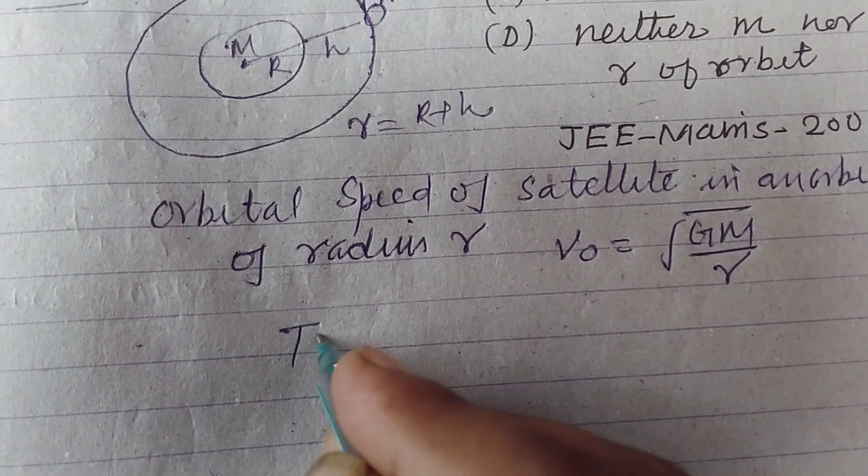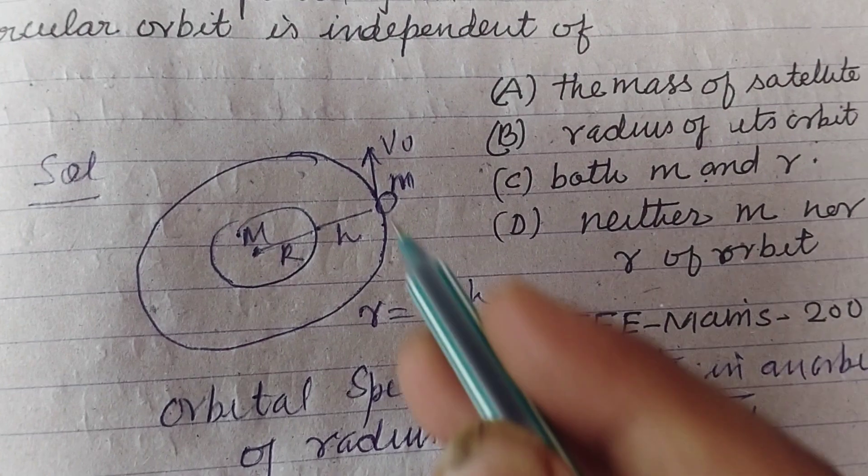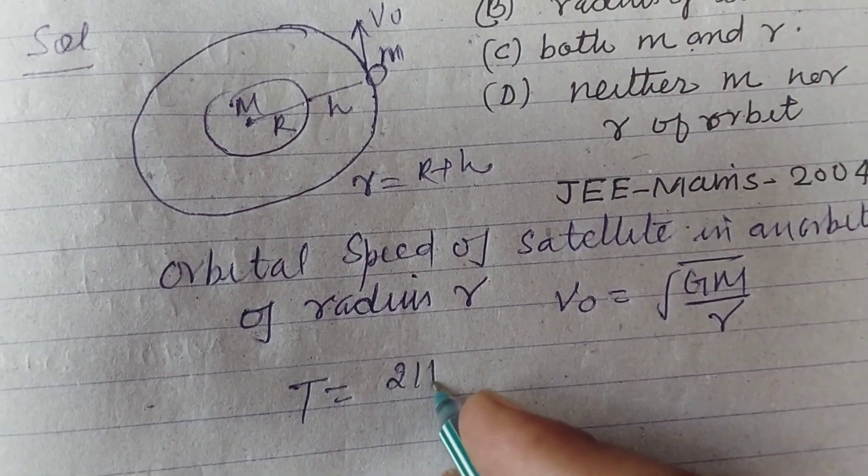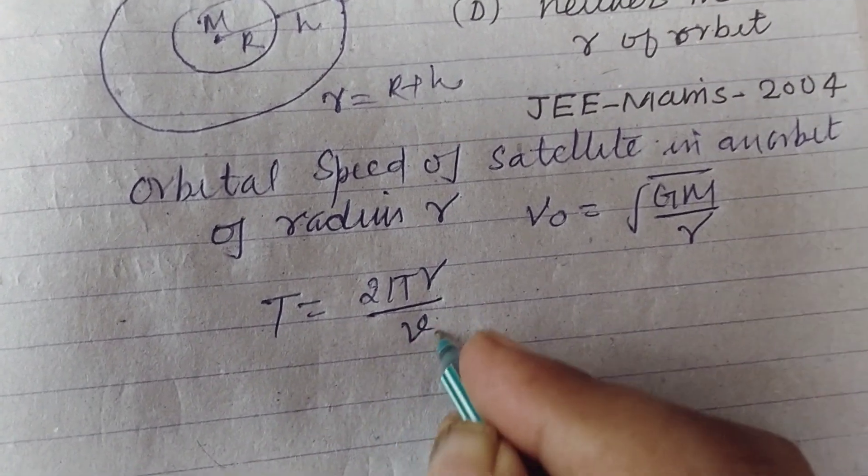So time period or time of revolution of the satellite equals distance covered in one revolution, which is 2πr, over orbital velocity.